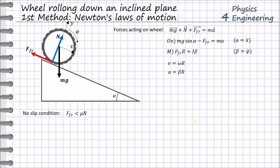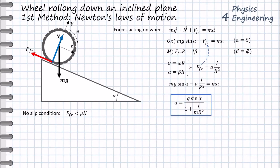As a next step, we consider the relation between the linear velocity and angular velocity of the wheel, and likewise between the linear acceleration and angular acceleration. We can then derive the friction force from the torque equation and substitute it into the force equation. As a result, we have one equation with only the linear acceleration of the wheel. The solution is the linear acceleration as a function of the wheel's radius, its mass, and the slope angle.